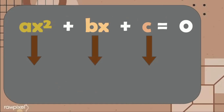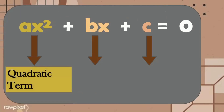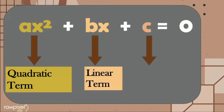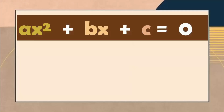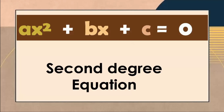In the equation Ax² + Bx + C = 0, the term Ax² is our quadratic term, Bx is our linear term, and C is our constant. We can notice that the exponent of the first term is 2, which is why a quadratic equation is also called a second-degree equation — because the highest degree of the unknown variable x is 2.